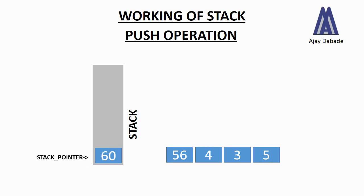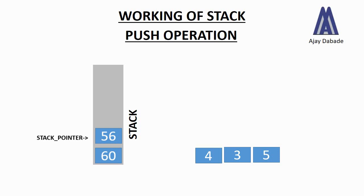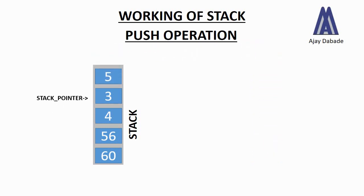The stack pointer will point to that first number that we have pushed in the stack. Now we will push another number, and what will happen is the stack pointer will get incremented and point to the latest number, which is 56. So the basic concept is: every time you push a number into a stack, the stack pointer will point to the last number that was pushed. Now we will push the next number, which is 4, and then the number 3.